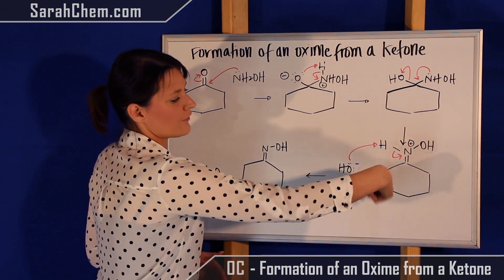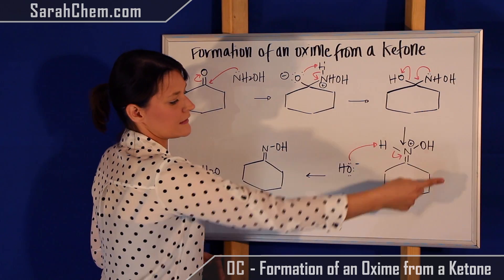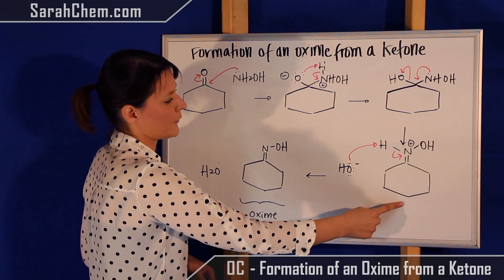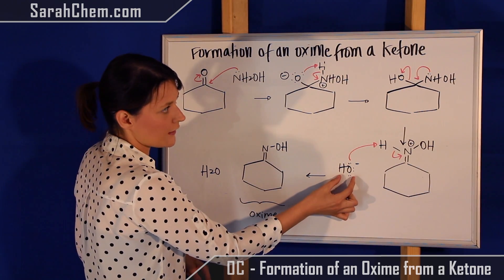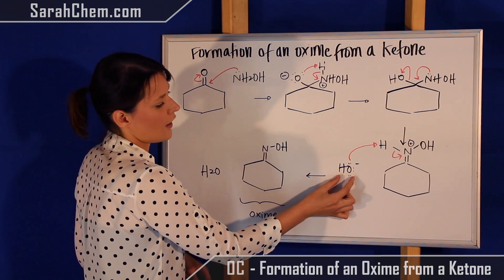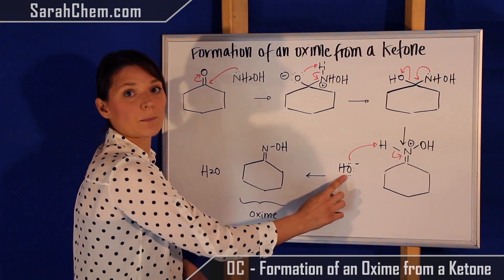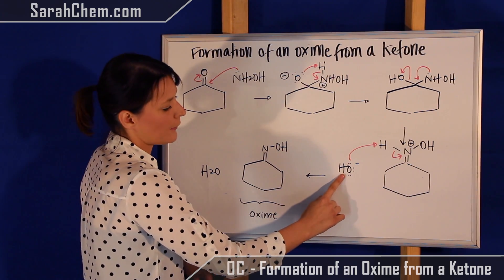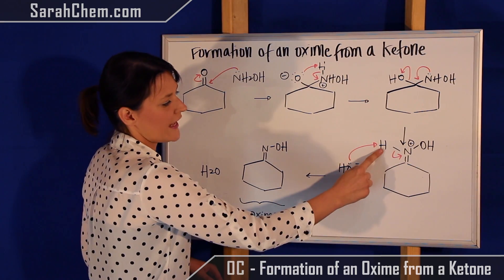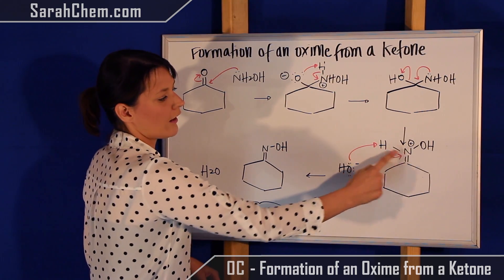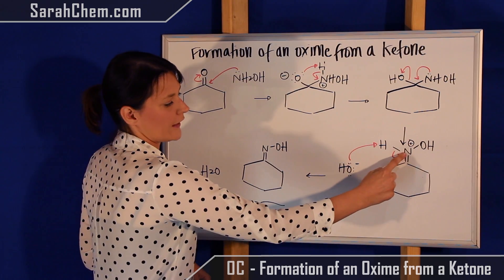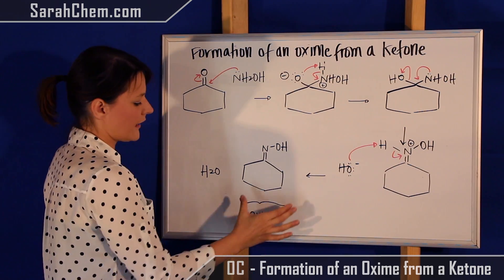The final thing we want to do is just make sure that we eliminate as many charges as possible. We don't want to have any charged species left on this compound over here. So what we're going to have is the hydroxide that was kicked off would act as a pretty decent base. It's going to come and take that H right off of the nitrogen, leaving those electrons on the N.